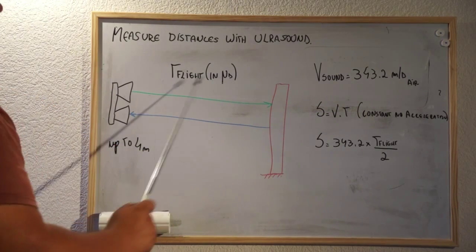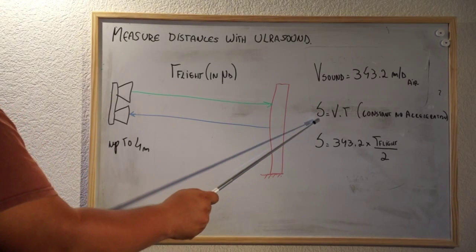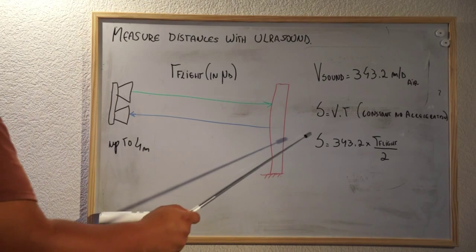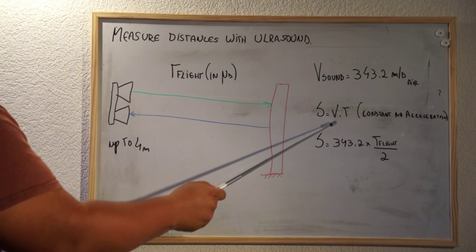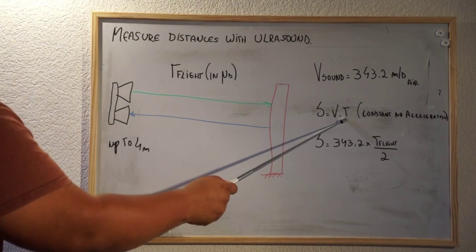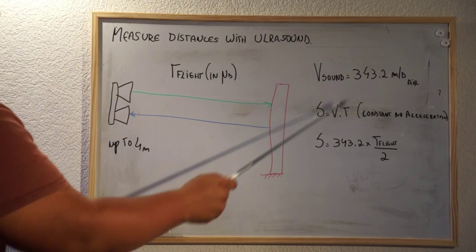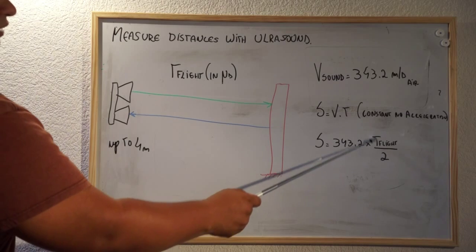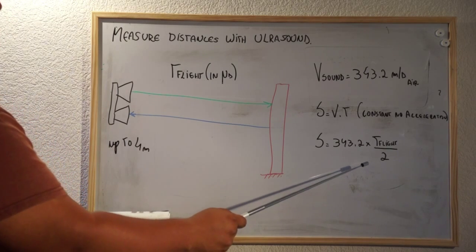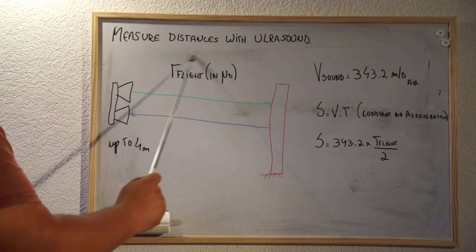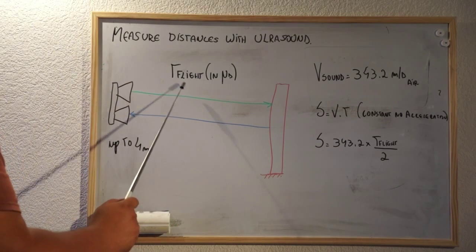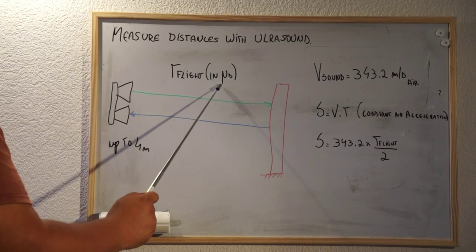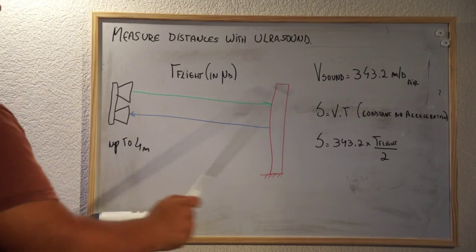We just bring these values from microseconds to seconds using Newton's motion law: space equals speed multiplied by time. So we calculate 343.2 multiplied by T-flight divided by 2. The only thing we need to account for is that when we calculate T-flight on the microcontroller, it's in microseconds, so we need to convert it to seconds.